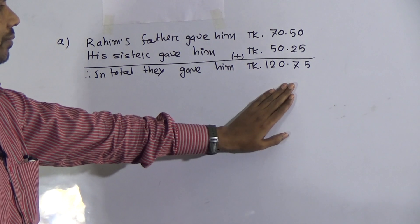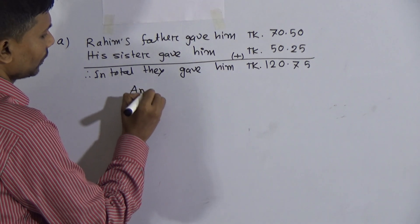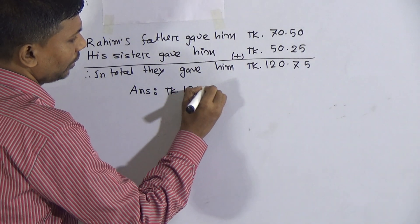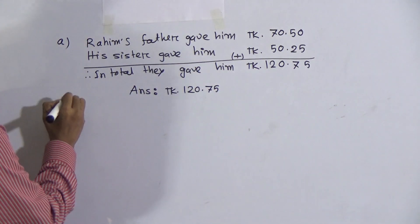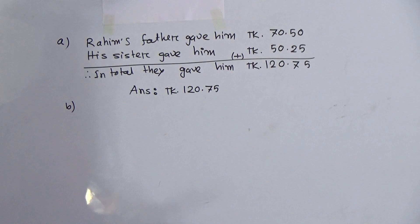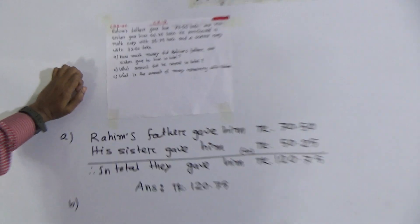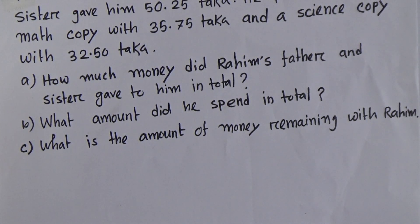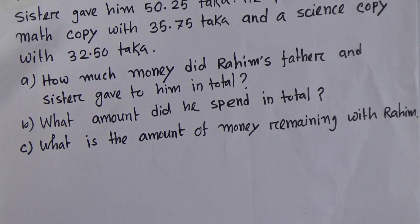Now write the answer: Taka 120.75. Now I will solve b number. Again read the question: what amount did he spend in total? You see he purchased a math copy with 35.75 taka and a science copy with 32.50 taka. That means he spent the two amounts. He purchased a math copy and he also purchased a science copy.